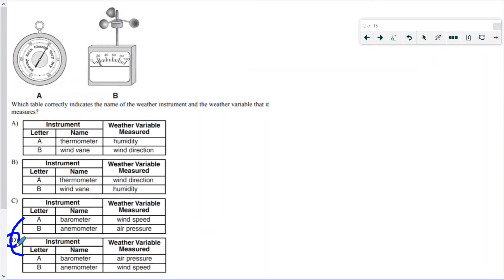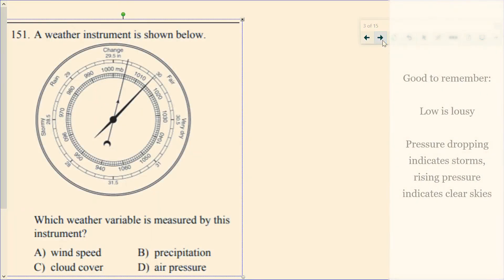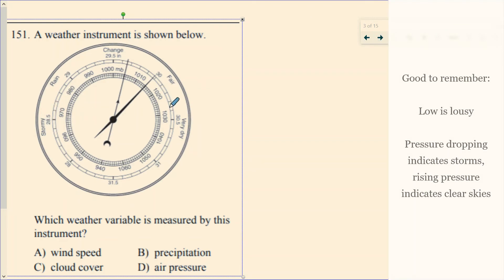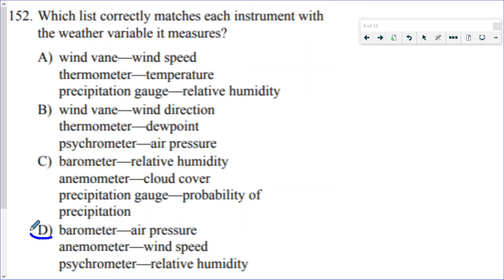Similar picture here — this one does put the units on, you can see inches — but it's the same thing: lower numbers are stormy, higher pressures are clear nice weather, so that's the barometer. Then they give you a straight-up list to match which instrument goes with which variable, and the answer is choice D. The psychrometer really measures wet bulb and dry bulb, and you can determine relative humidity from it — sling psychrometer goes with humidity, dew point, wet bulb, and dry bulb.